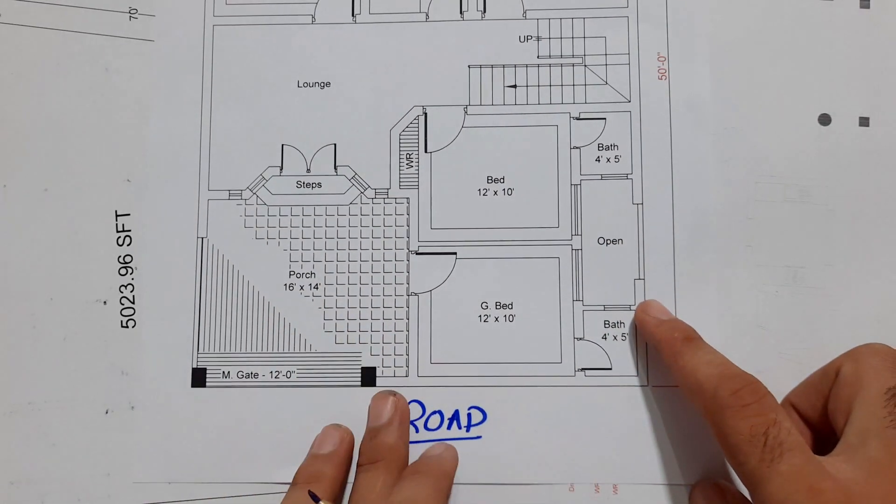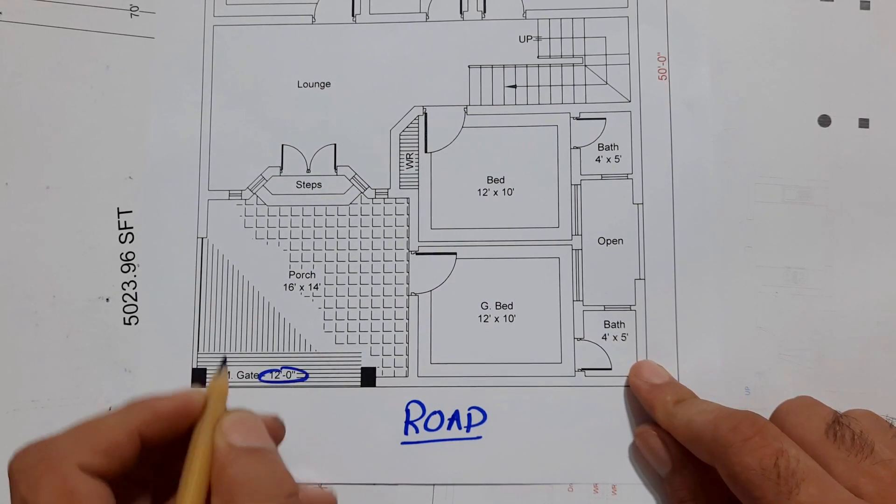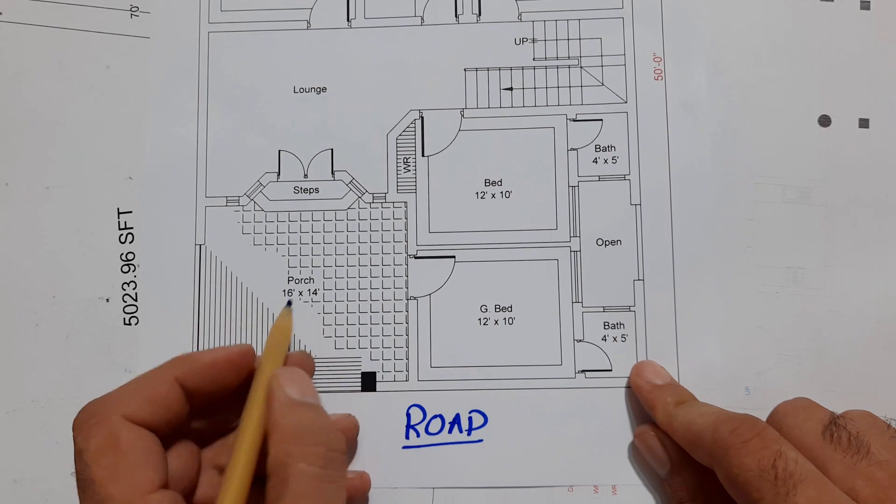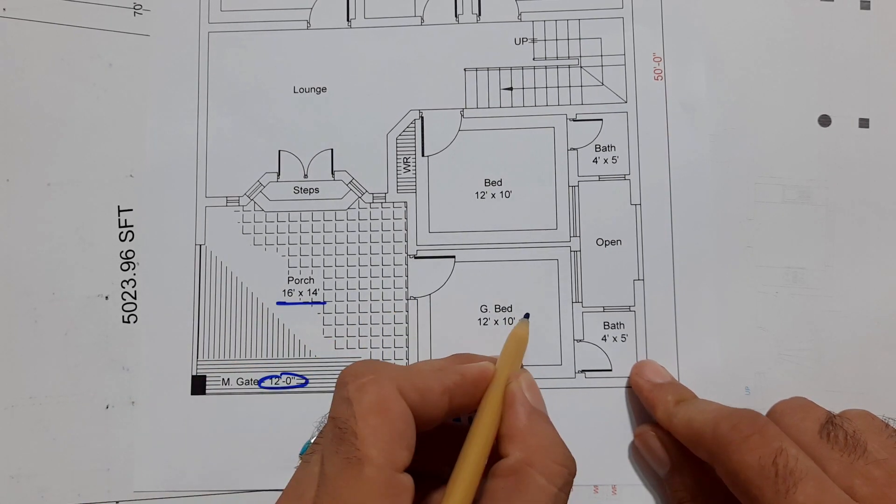I will start from here. You can see this is the main gate which width is 12 feet. This is car porch and the size of the car porch is 16 by 14 feet.